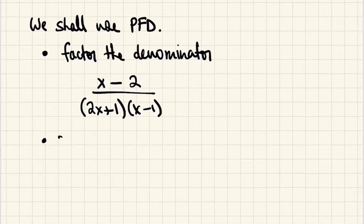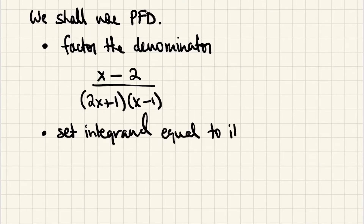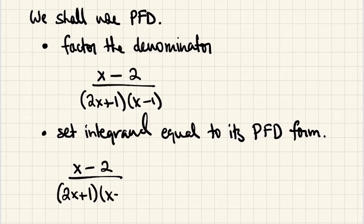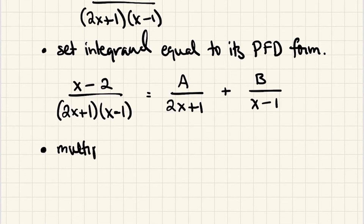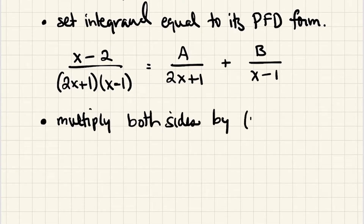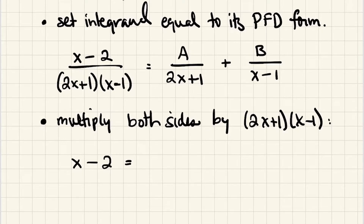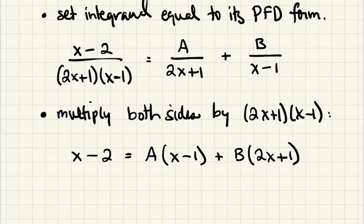The next thing we do is set the integrand equal to its partial fraction decomposition form. We have two irreducible linear factors in the denominator, so this simply decomposes into some unknown constant A divided by one of the factors, plus some unknown constant B divided by the other factor. We then multiply both sides by the factored denominator. On the left we get x minus 2, and on the right we get A times (x minus 1) plus B times (2x plus 1). Our job is to find A and B.